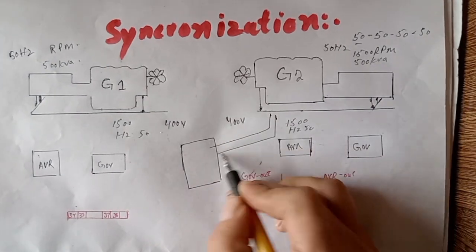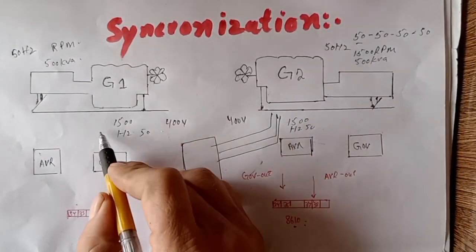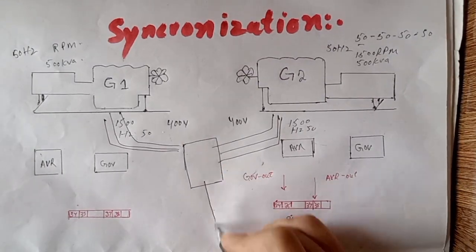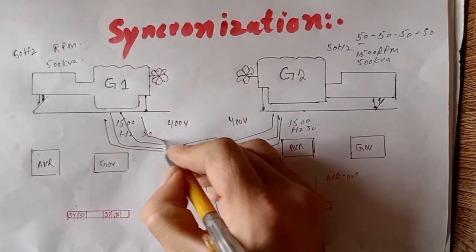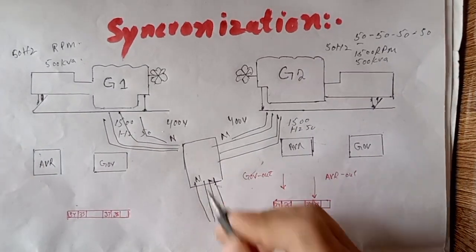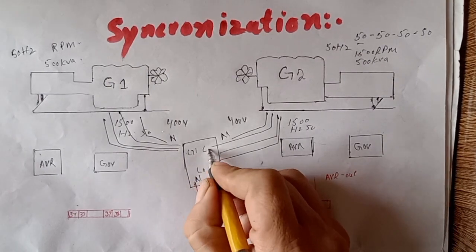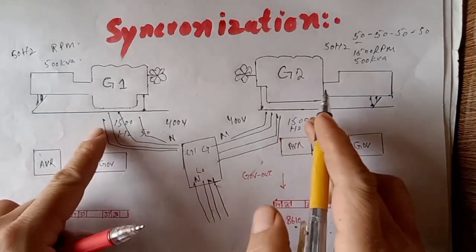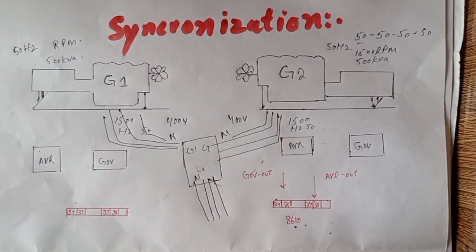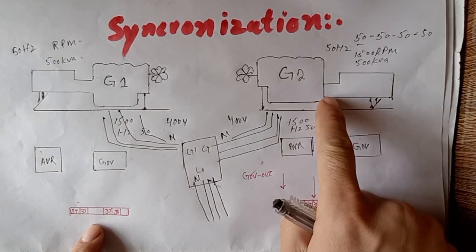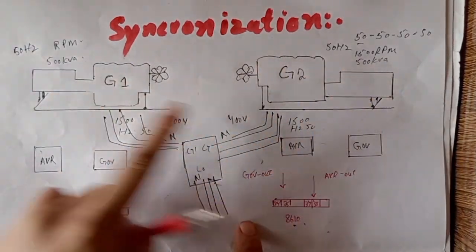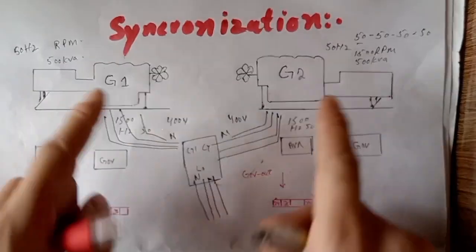Take the three phases from generator one and also three phases from generator two. This is our bus bar going to load — three phases and neutral from each generator. Match all ratings, frequency, and RPM of both generators. Install one DFC controller model 8610 on each generator. All frequency, voltage, and rating parameters must be the same for both generators.